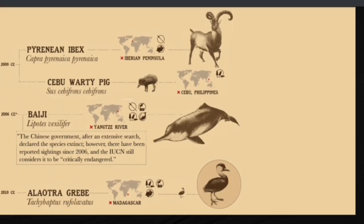The Caspian tiger, Panthera tigris virgata, also went extinct, though scientists are hoping to bring it back. In the 2000s, the Pyrenean ibex went extinct due to hunting and invasive species. The Sumatran pig was also lost due to destruction of its habitat. In 2006, the baiji — a species of river dolphin — went extinct due to four main factors: hunting, destruction of its habitat, pollution, invasive species, and overfishing. The Chinese government declared the species extinct after intensive research, though there have been reported sightings since 2006 and the IUCN still considers it critically endangered.